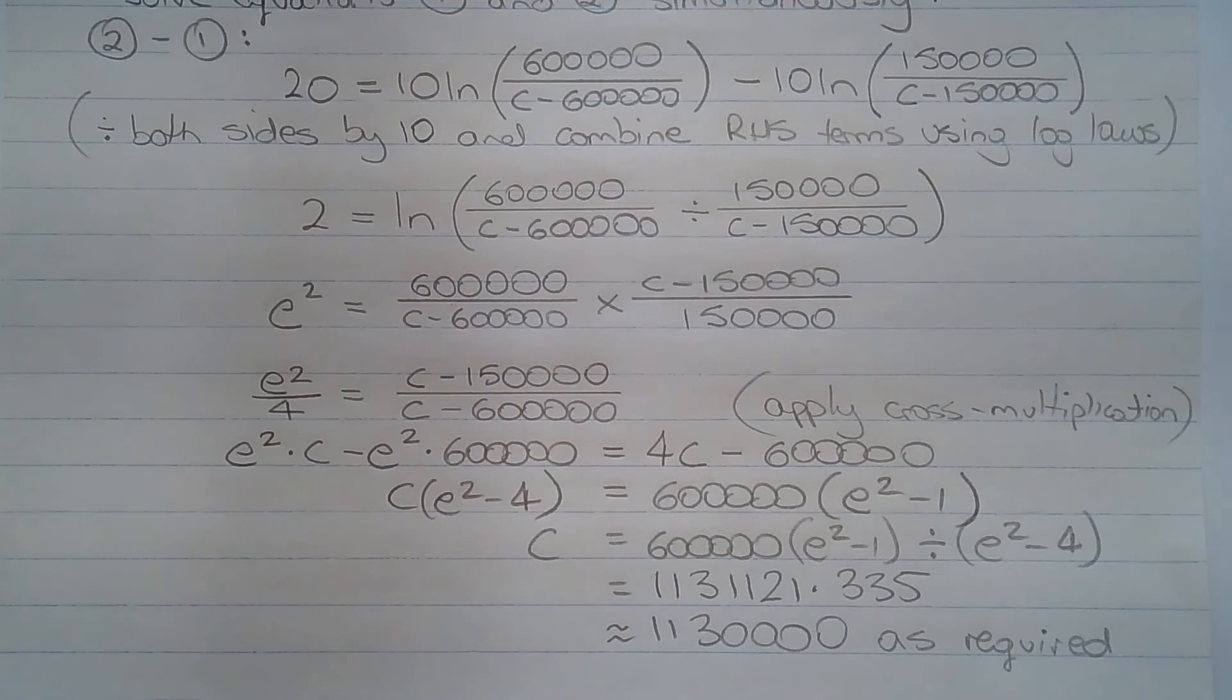Then dividing both sides of the equation by (e squared minus 4), we get c equals 600,000 multiplied by (e squared minus 1) divided by (e squared minus 4). And that equals 1,131,121.335, which rounds to 1,130,000 as required.